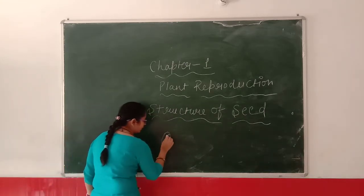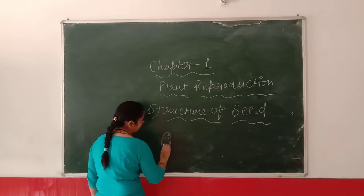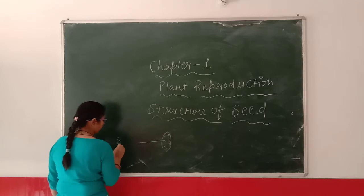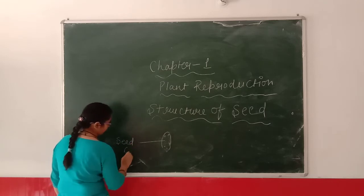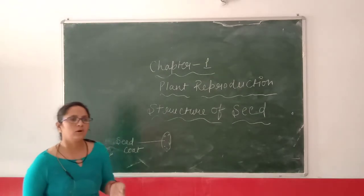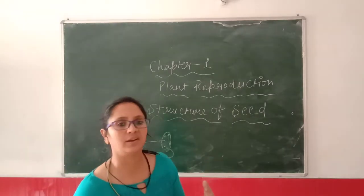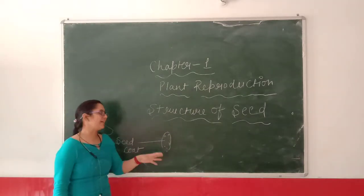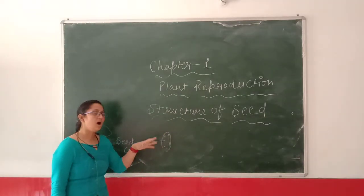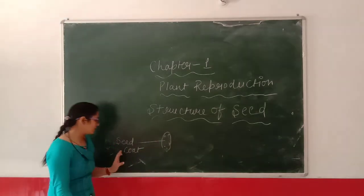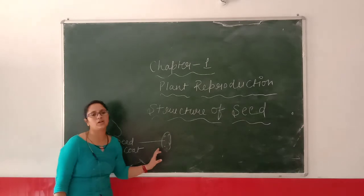The outer covering of the seed is called the seed coat. Just like we wear a coat to protect ourselves from harsh weather conditions, a seed also has a seed cover that protects it from harsh weather conditions. So the seed coat is the outer covering of the seed.